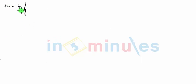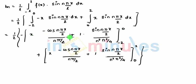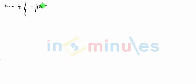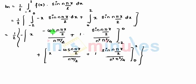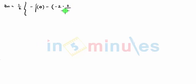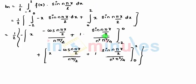Now we substitute the limits. b_n equals 1/2 outside. When we substitute the upper limit 0 into the first term, x = 0 gives 0, and sine(0) = 0, so the upper limit contribution is 0. For the lower limit, substituting x = -2: the 2s cancel, giving (-cos(n pi)) multiplied by (2 / n pi), which comes to be cos(n pi). The next sine term gives sine(n pi) = 0.